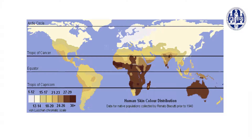Populations adapted to living farther away from the equator, where there was less ultraviolet radiation, over time developed lighter skin to allow for faster and more efficient production of vitamin D. Populations living closer to the equator had ample exposure to sunlight and therefore developed darker skin, which reduced the risk of vitamin D toxicity and skin cancer. Please note this is an oversimplification and several other factors are involved in skin color, but this is a very important one.